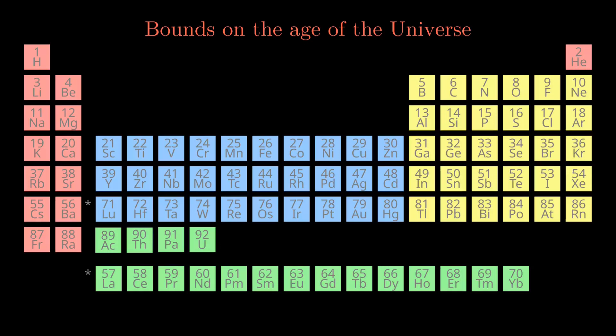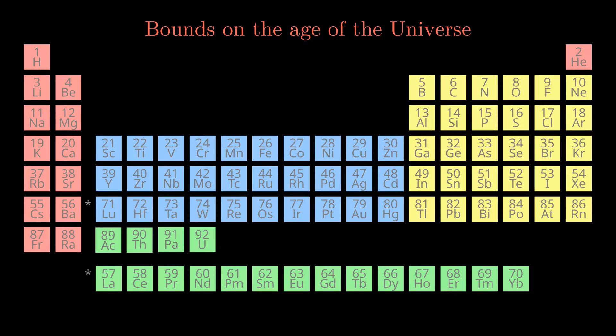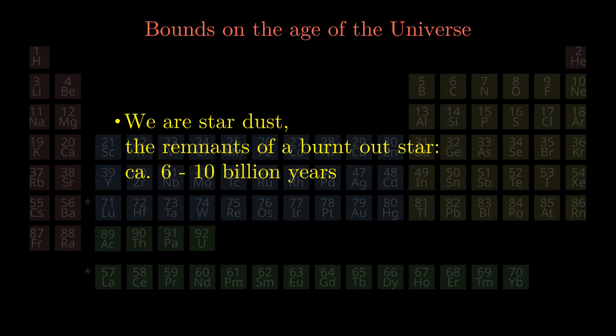But let's start on earth. Here on earth you can find more than 90 different chemical elements. On the other hand, during the so-called Big Bang nuclear synthesis in the early stage of our universe, only hydrogen and helium had been created abundantly.